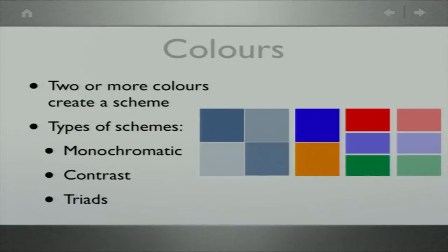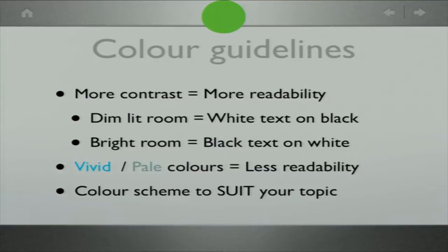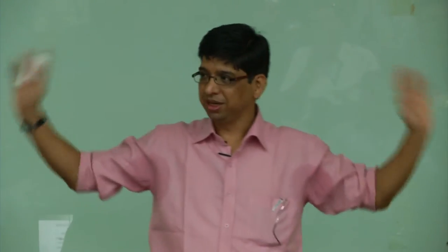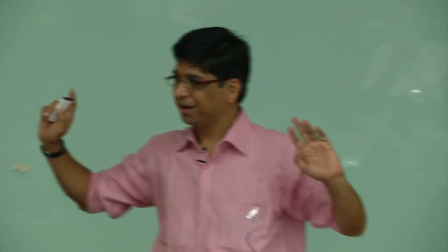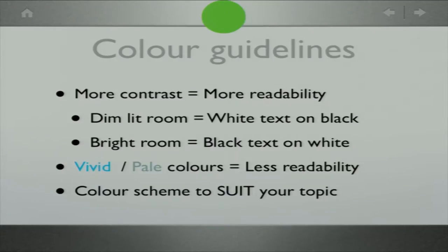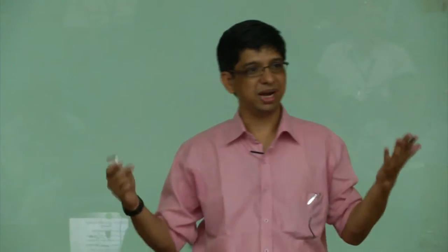There are some color schemes and guidelines. More contrast means more readability — have the highest contrast possible when you want to show readability. In a big room with low-contrast projectors, using only black and white means the contrast is the highest — you cannot go beyond this. A dim-lit room should have white text on black. Should I use white text on black or black text on white — since the lights are on here, I decided to use black text on white. Vivid and pale colors will definitely have very low readability.